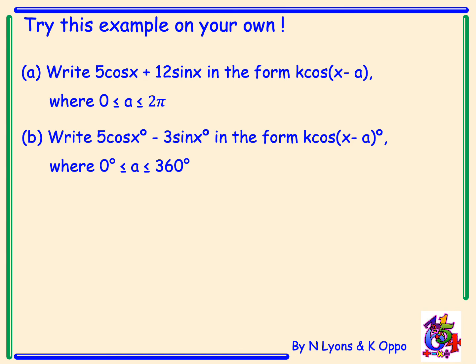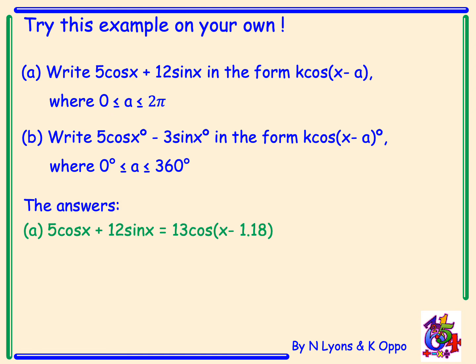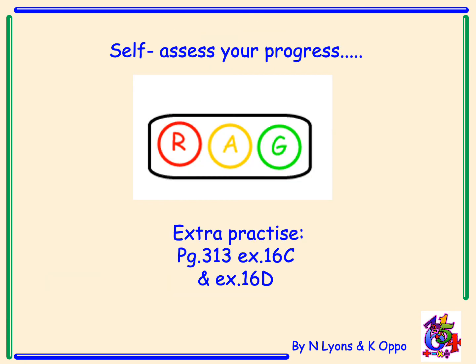Now try some examples for yourself — please pause the video. The answers are: for A, 5 cos x plus 12 sin x equals 13 cos of x minus 1.18 — you would have had to change your calculator to radians to calculate the angle. For B, 5 cos x minus 3 sin x equals root 34 cos of x minus 329 degrees. For extra practice, turn to page 313 of your textbook, exercise 16C and 16D.